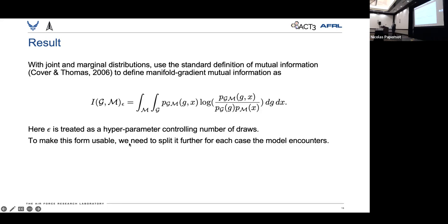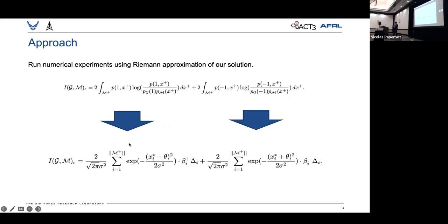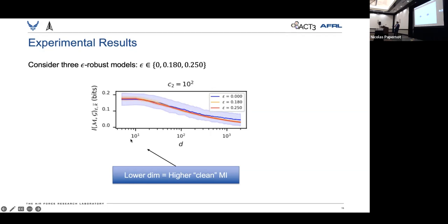In our first set of experiments, we run Monte Carlo approximations on that closed-form solution. And what we found is that the rate of increase from mutual information is increasing slower than the increase in dimensionality.